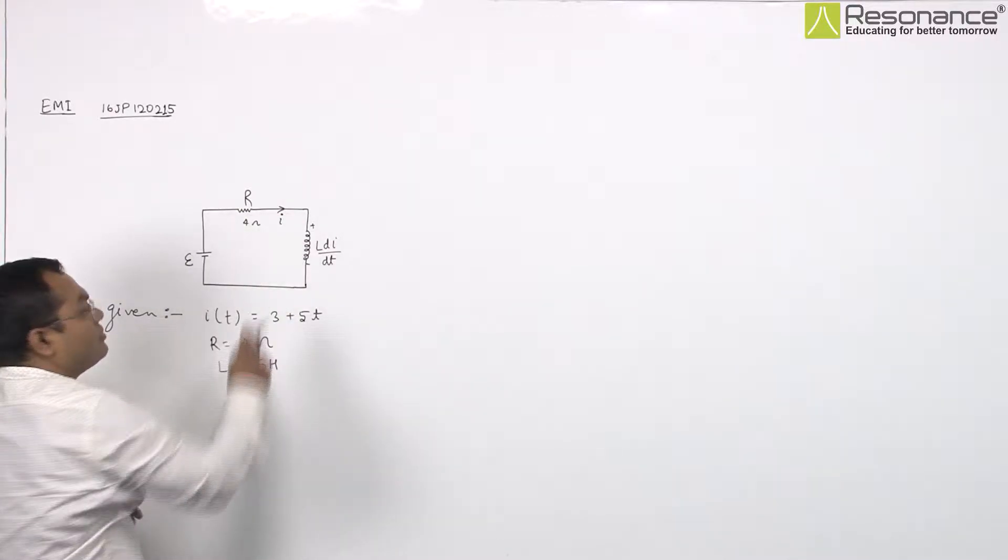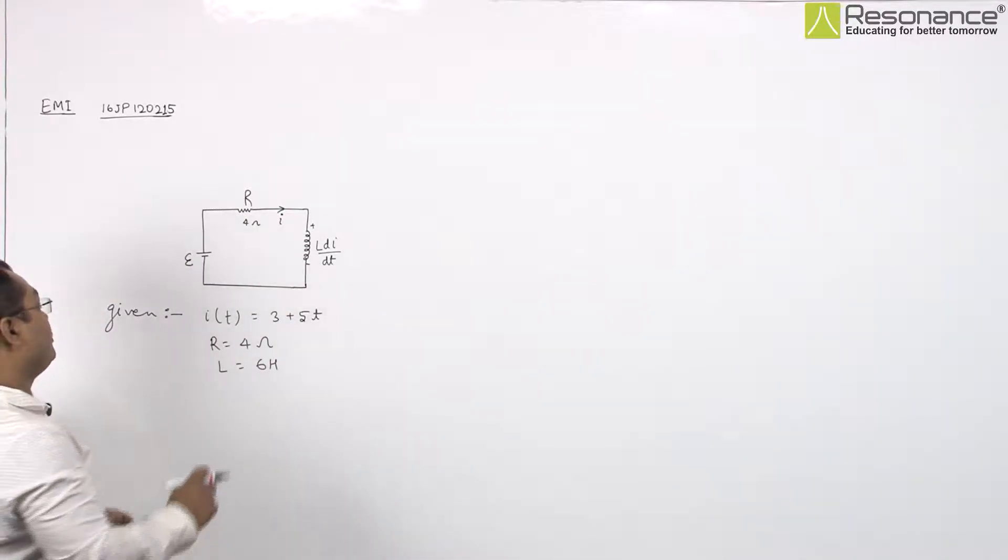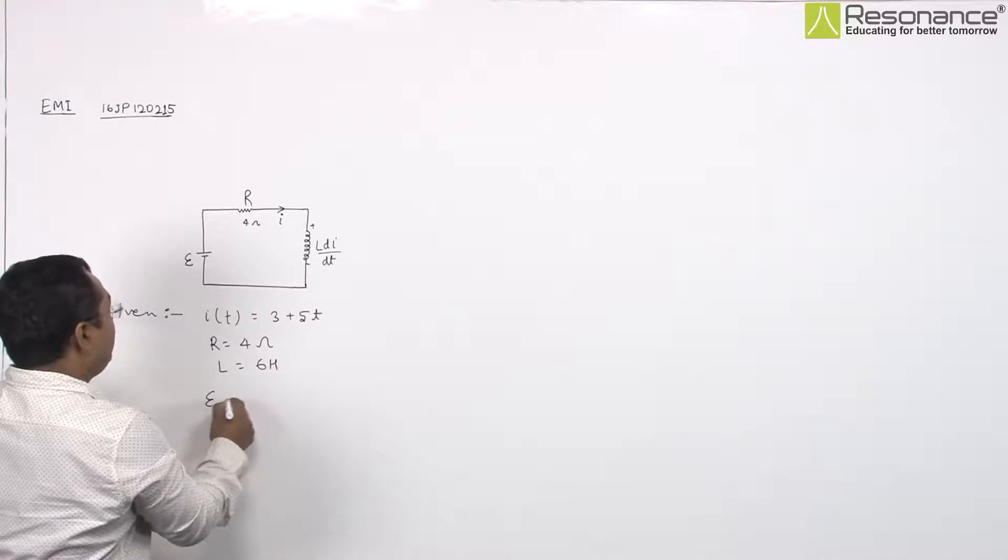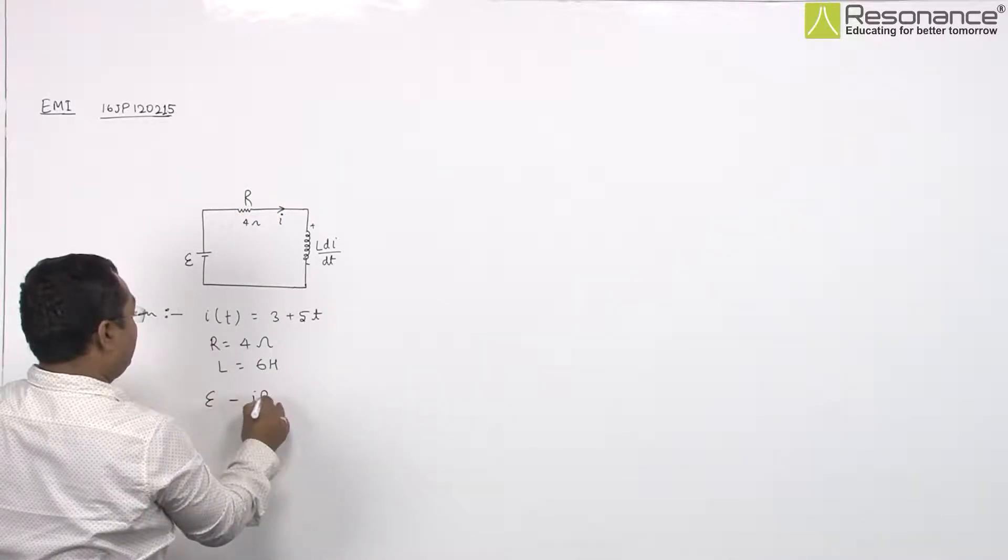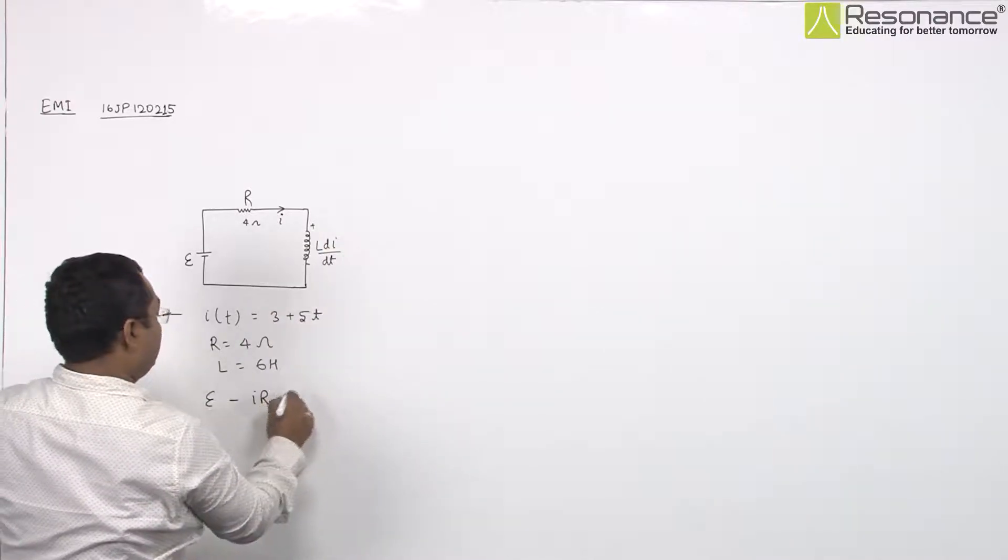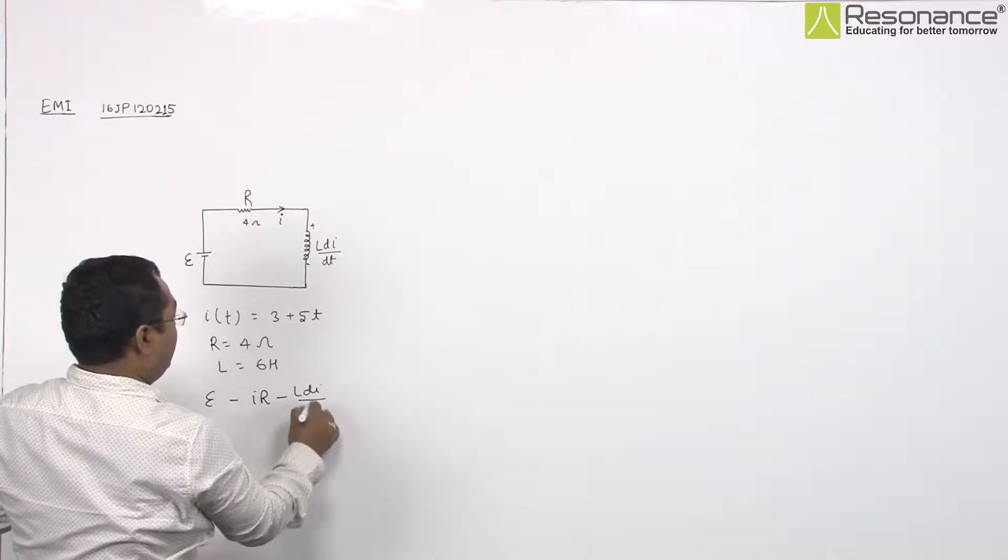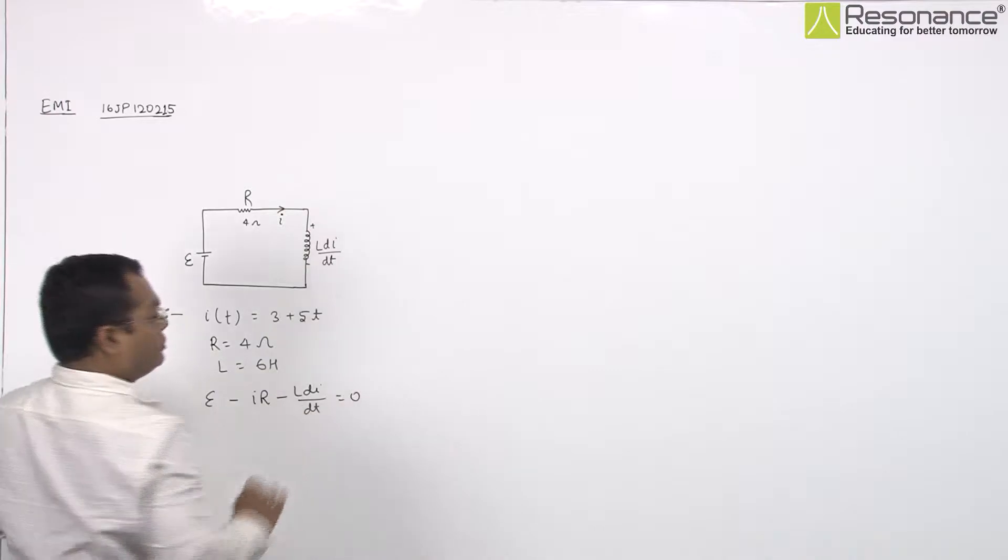By using KVL in this circuit, we can write the equation E minus I into R minus L di upon dt equals 0.